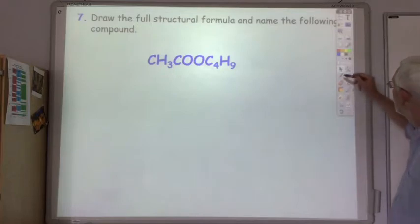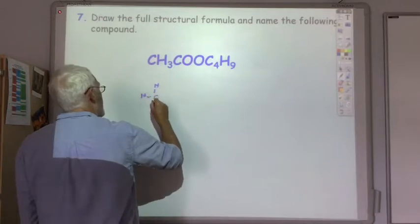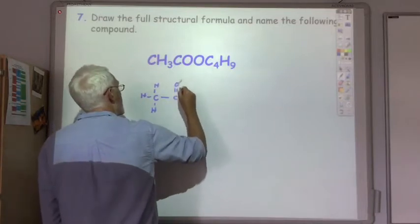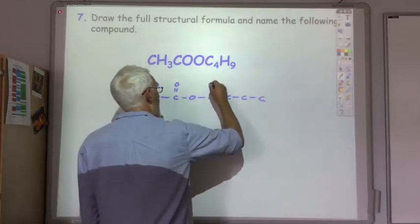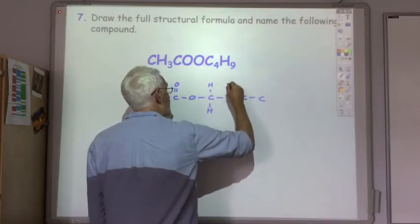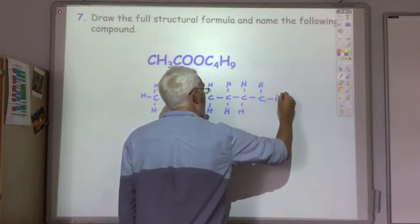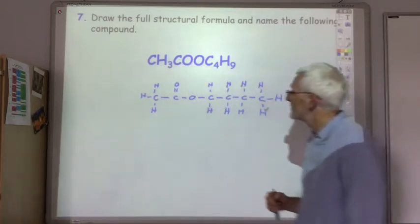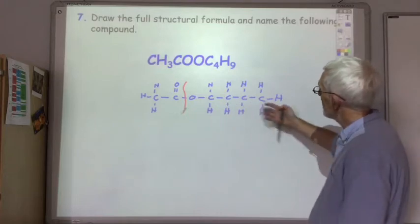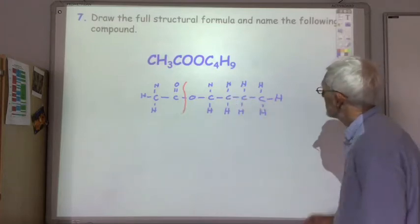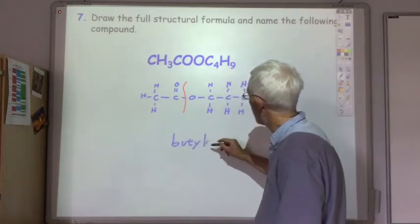Okay, seventh one. Okay, so we've got another ester here. There's the acid group, this was the alcohol, one, two, three, four, so that's butyl ethanoate.